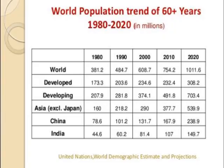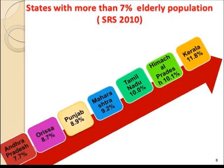This is the population projection made by the United Nations. By 2020, the estimated proportion of the geriatric population in India is 149.7 million, according to the SARS 2010 data. These are some of the states where there is a high number of elderly people. Tamil Nadu comes in the higher bracket — 10% of the population in Tamil Nadu is elderly, that is more than 60 years.